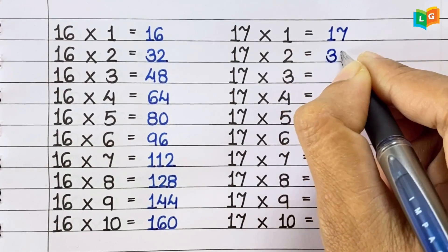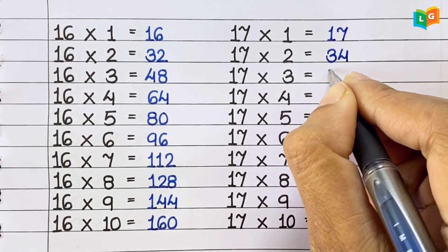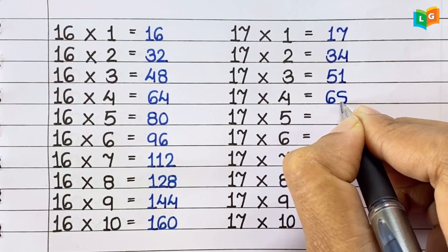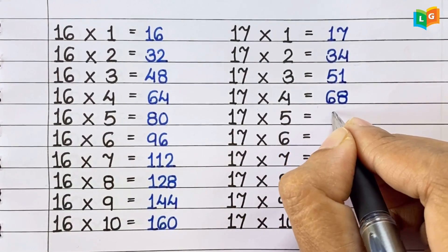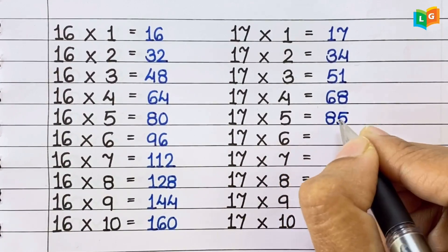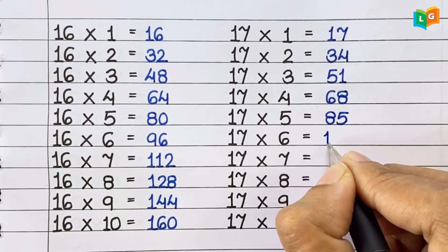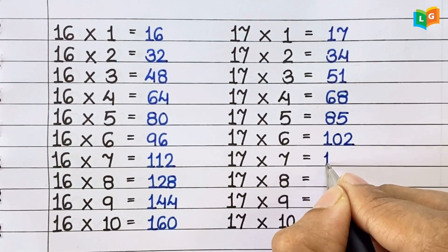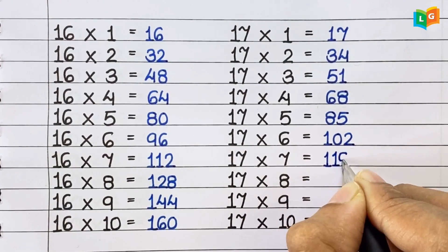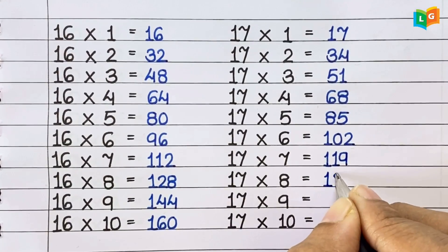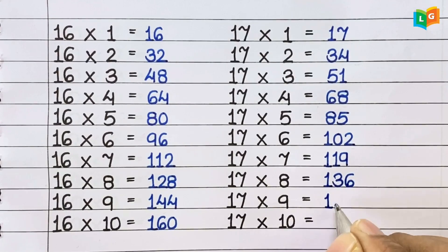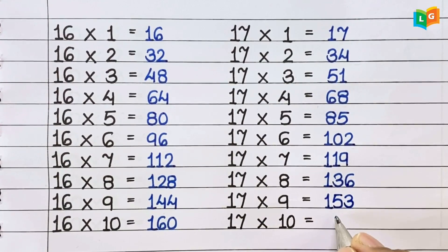Now let's see table of 17. 17 1s are 17, 17 2s are 34, 17 3s are 51, 17 4s are 68, 17 5s are 85, 17 6s are 102, 17 7s are 119, 17 8s are 136, 17 9s are 153, 17 10s are 170.